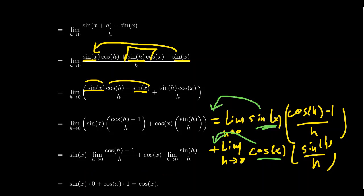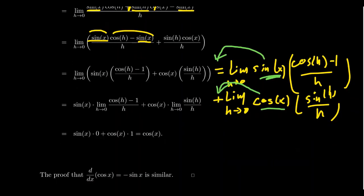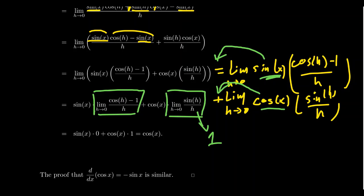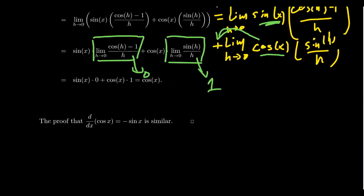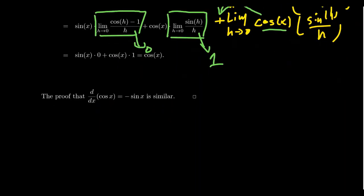Now that we've pulled out sine of x and cosine of x, we need to evaluate the remaining limits. We have previously shown that the limit as h approaches 0 of sine of h over h converges to 1, and that the limit as h approaches 0 of cosine h minus 1 over h converges to 0. So we get sine of x times 0, which is 0, plus cosine of x times 1, which is cosine of x. Therefore, the derivative of sine is cosine — pretty phenomenal. The derivative of sine is its complementary function, cosine.